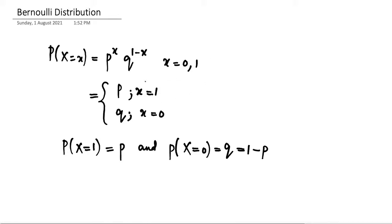So this is the PMF of a Bernoulli distribution. We can write this PMF either as p raised to x into q raised to 1 minus x, with the range of x as 0 and 1, or we can write the probability as p when x equals 1 and q when x equals 0. Also, probability of x equal to 1 is p and probability of x equal to 0 is q, which is 1 minus p.